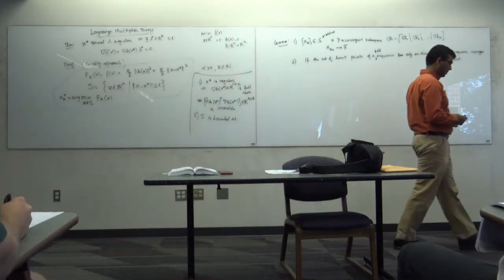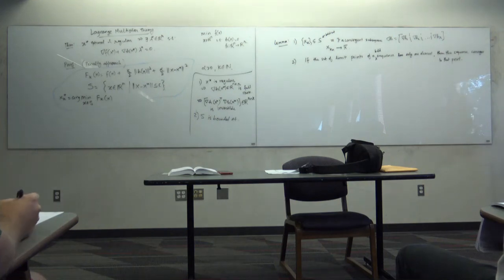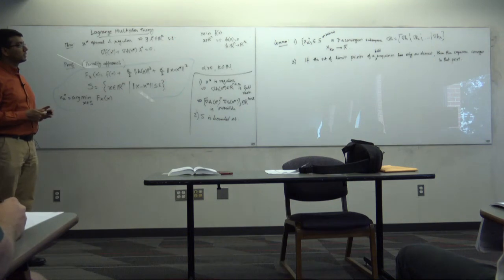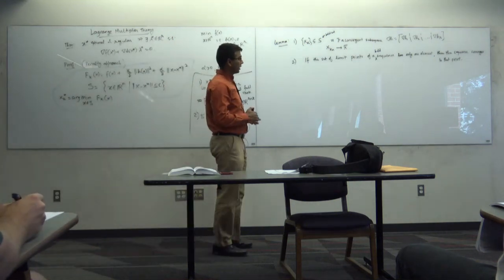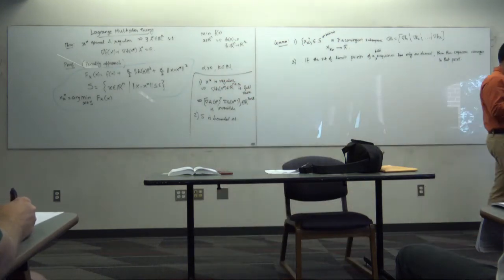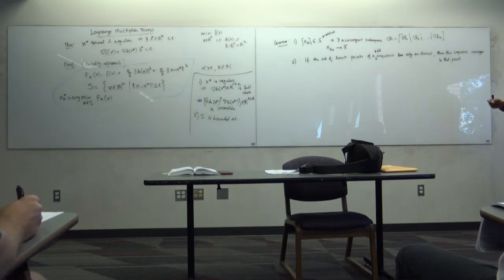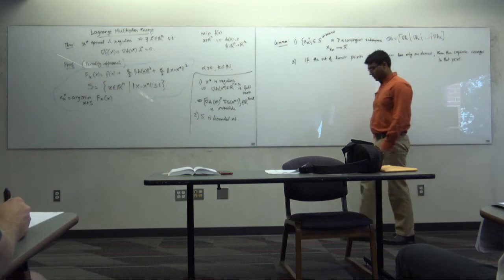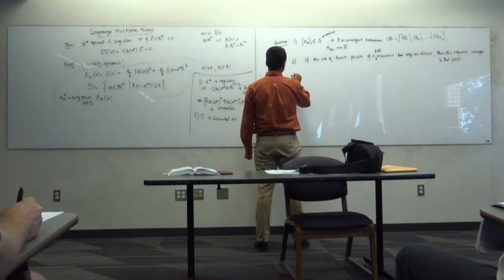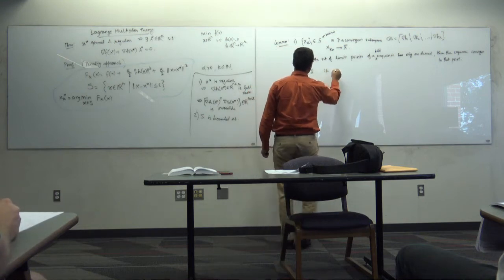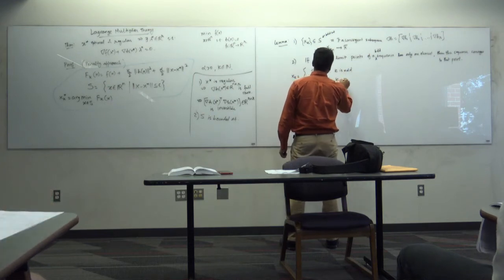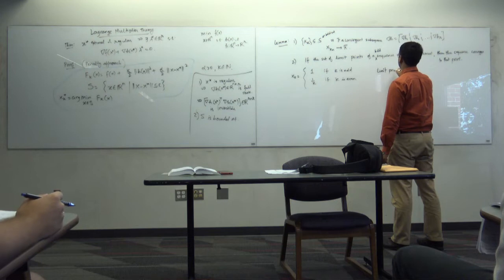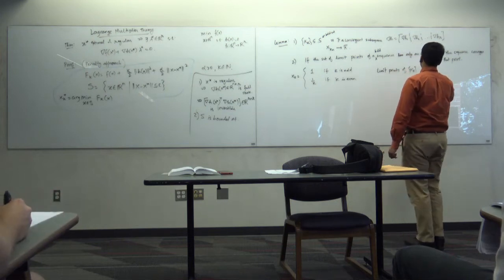What are the set of limit points? I can construct many subsequences from the original sequence and figure out whether those sequences converge. The set of limit points is the set of all points that any subsequence can converge to. For example, let x_k = 1 if k is odd and 1/k if k is even.